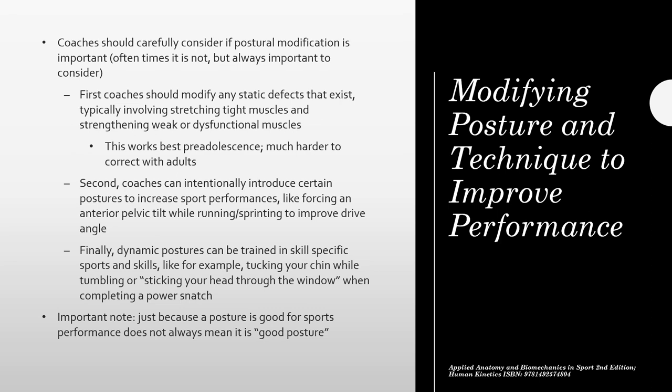Finally, you can take a dynamic posture and train it within a specific sport skill — like tucking your chin when tumbling, or driving your head through in a power snatch. So there are levels to this: modifying static defects, intentionally introducing sport postures, and training dynamic posture in specific skills. It's also important to note that a posture good for sport is not always a good posture in general. That's it for unit one — I look forward to seeing you in chapter eight and the start of unit two.